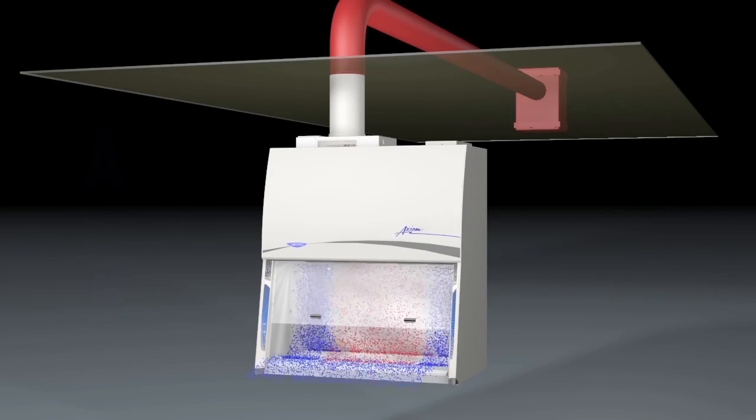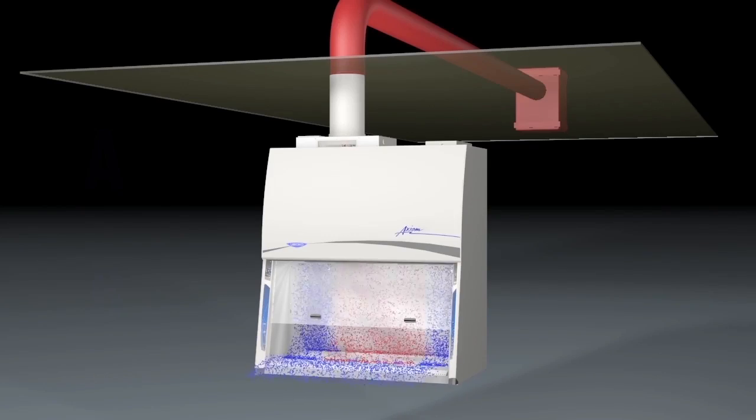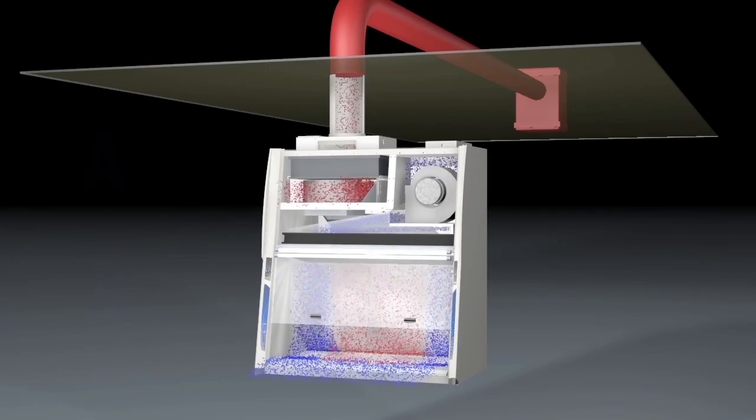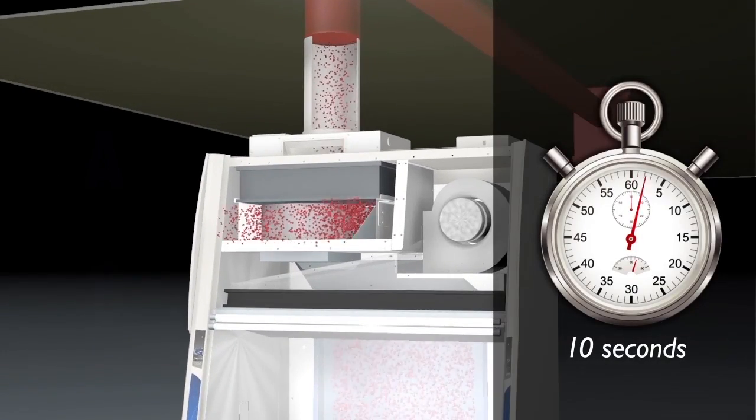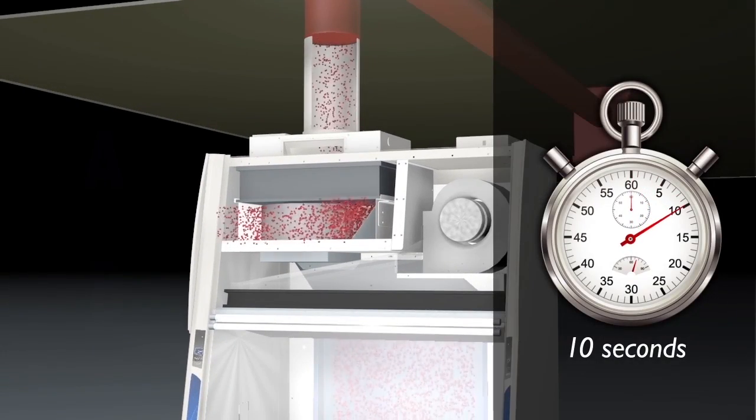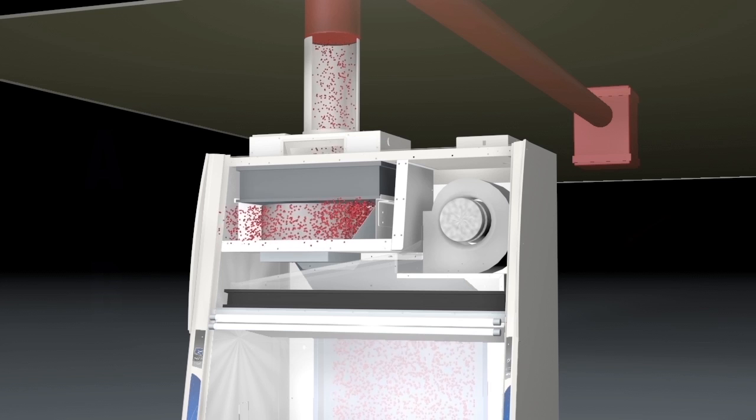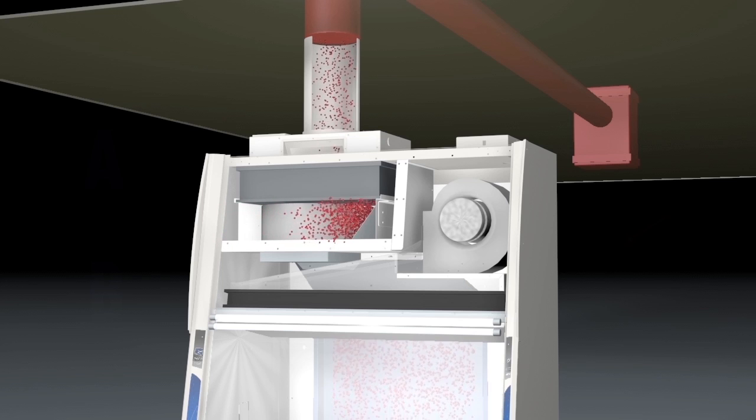When the countdown ends, the supply blower shuts down first and downflow and recirculation cease. The exhaust blower operates for an additional 10 seconds to ensure the face of the cabinet stays negatively pressurized before imminent shutdown.